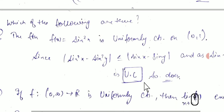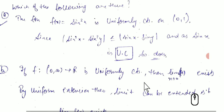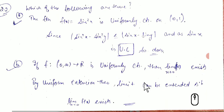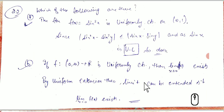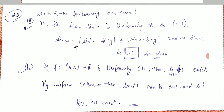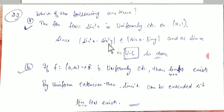Our second question has three statements. The first statement is: the function f(x) = sin²x is uniformly continuous on the open interval (0,1). Since |sin²x − sin²y| ≤ |sin x − sin y|, and since sin x is uniformly continuous, sin²x is also uniformly continuous. So option A is true.